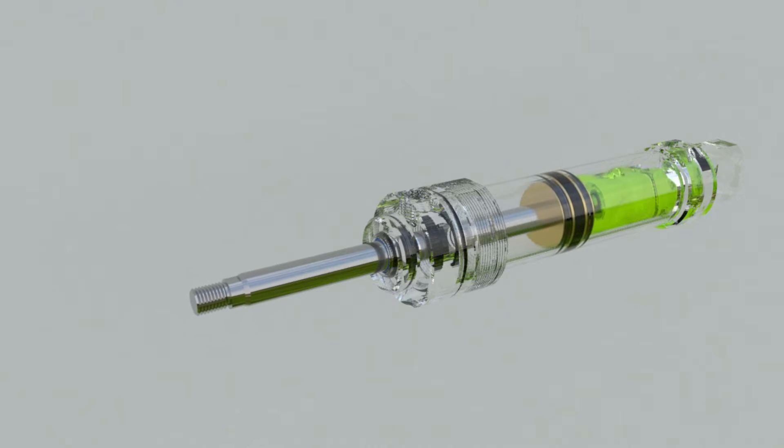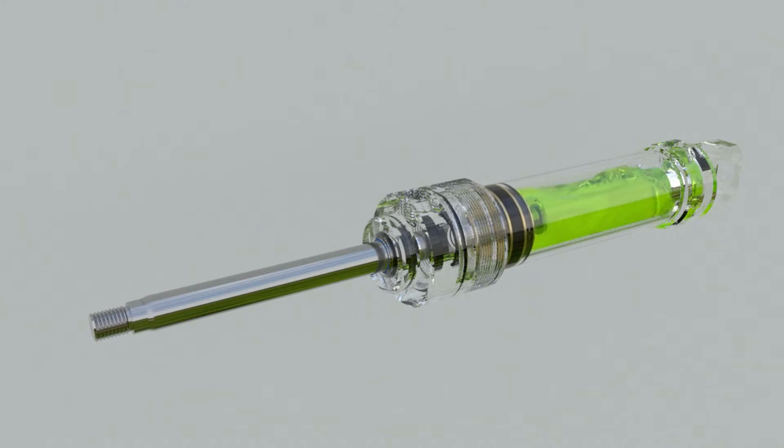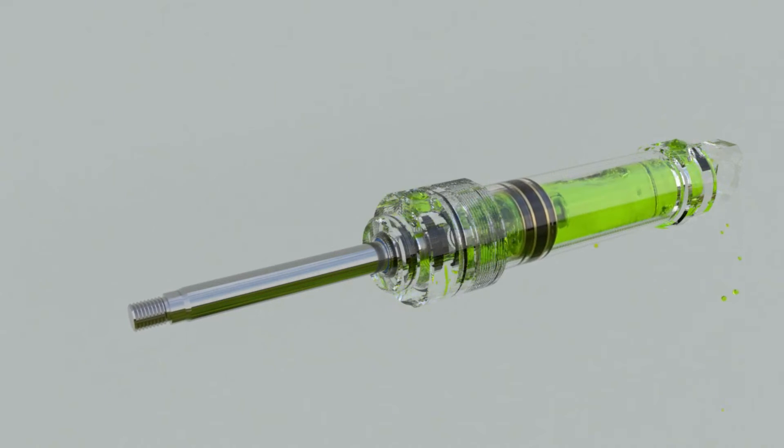The liquid must be supplied to the second chamber to retract the rod, and the liquid from the first chamber should flow to the tank. It turns out that to move the cylinder rod, the flow of liquid needs to be controlled. There is a special device, a directional valve, for this purpose.